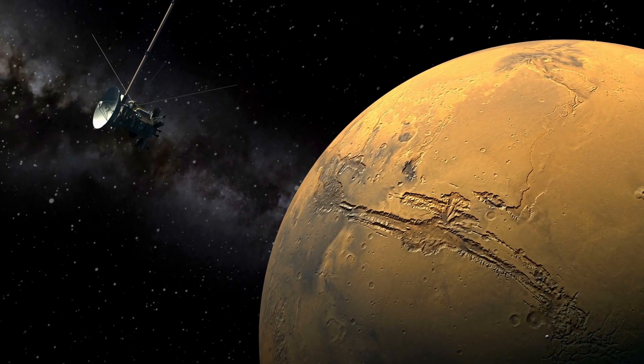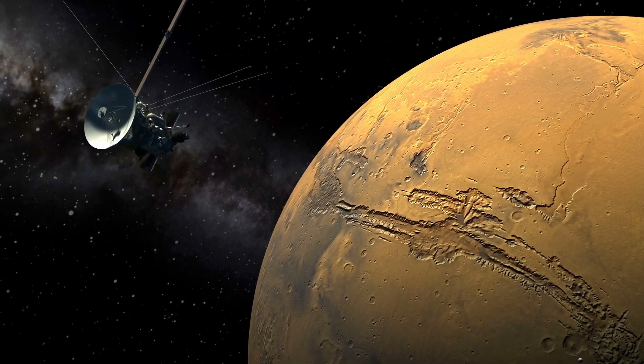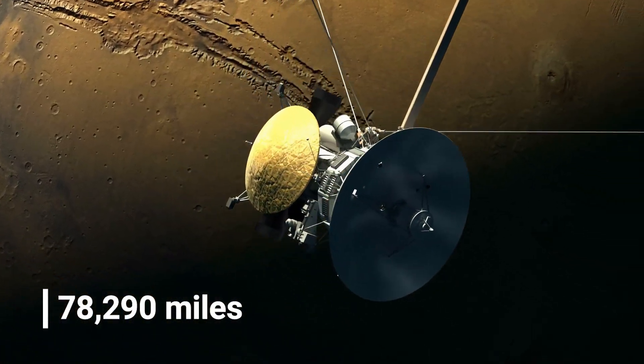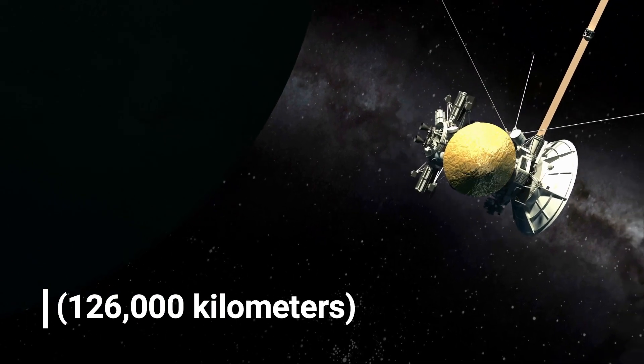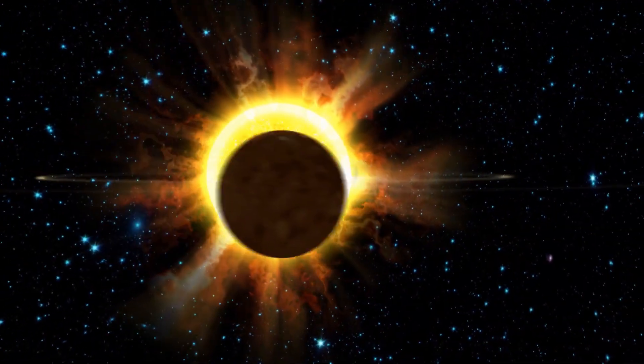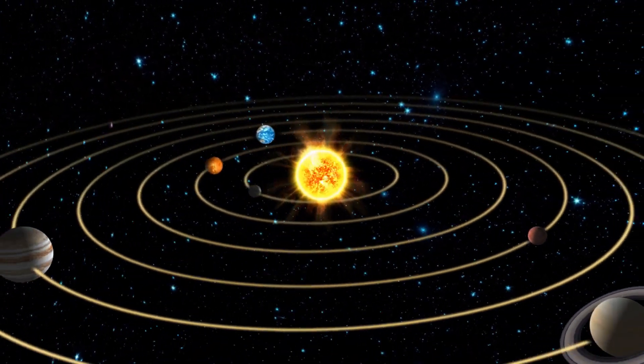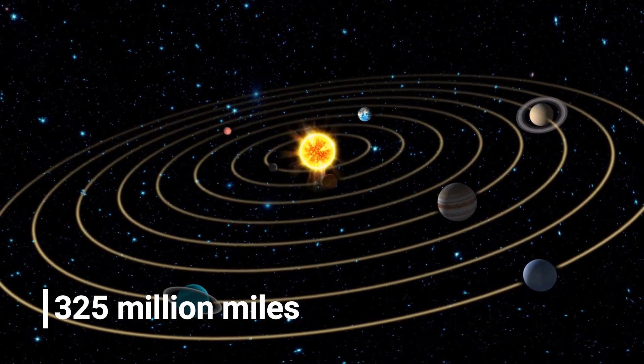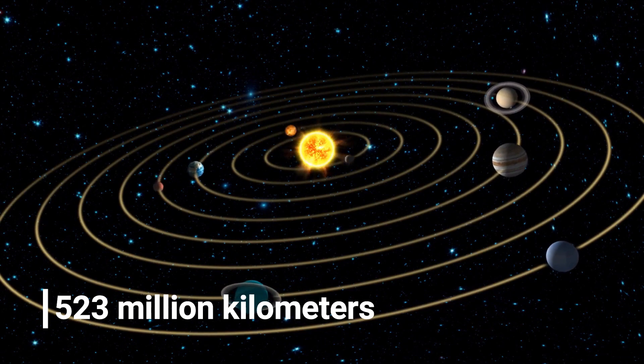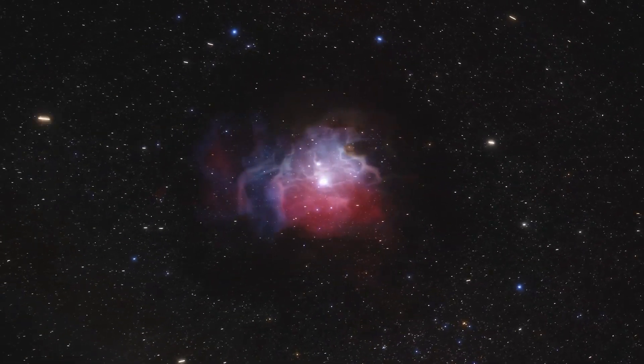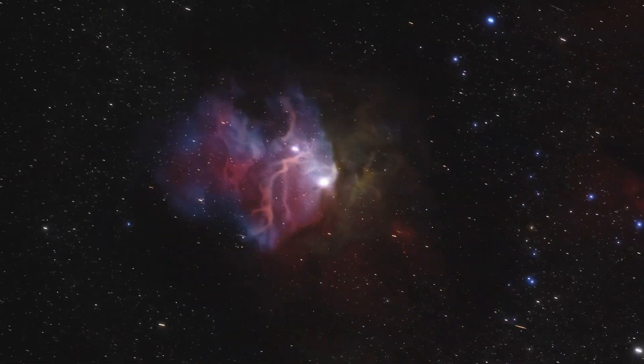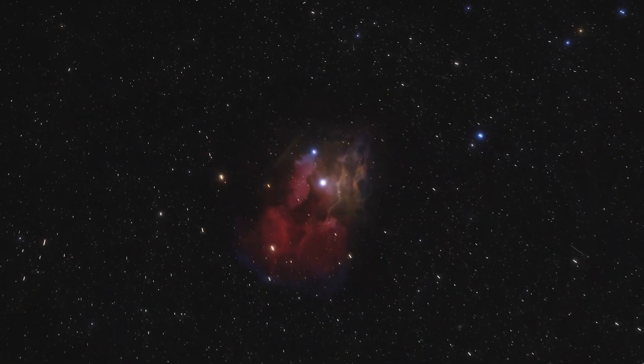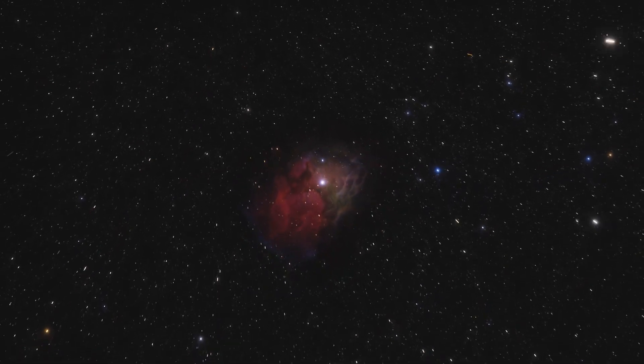Voyager 1's closest approach to Saturn was at 23:46 Universal Time of November 12, 1980, at about 78,290 miles or 126,000 kilometers. Following the encounter with Saturn, Voyager 1 headed on a trajectory to escape the solar system at a speed of about 3.5 astronomical units or 325 million miles or 523 million kilometers per year, 35 degrees out of the ecliptic plane to the north and in the general direction of the sun's motion relative to nearby stars. Because of the specific requirements for the Titan flyby, the spacecraft was not directed to Uranus and Neptune.